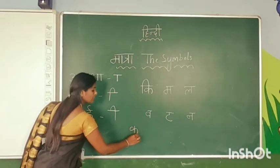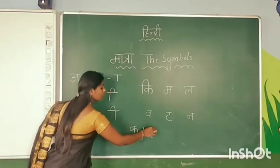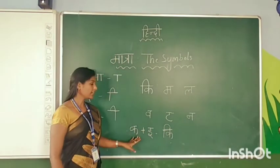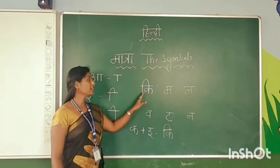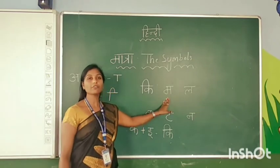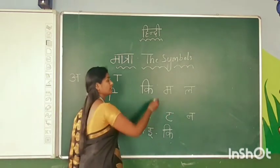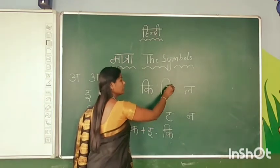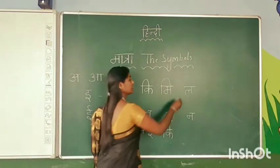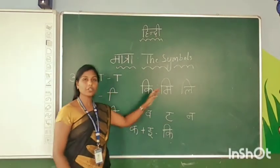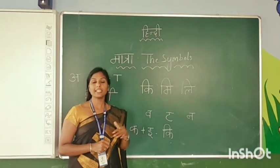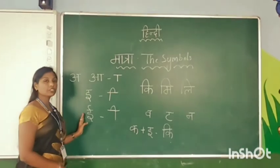Ka plus the short sound of E is equal to Ki. So the short sound gives Ki. Next, I am going to join the short E symbol with Ma — Ma plus E is equal to Mi. If I join with La, it will become Li. If I join with Ra, Ri. Sa gives Si. Ha gives Hi. Same pattern applies.